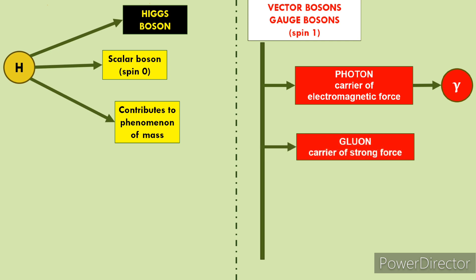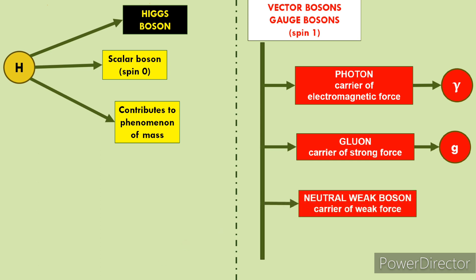Jo second type of boson hai gauge boson mein, wo gluon kehlata hai. Aur jaise ki iske naam se pata chalta hai, yeh strong force ko carry karne wala maana jaata hai — strong force, jo nuclear force rehta hai. Third type hai neutral weak boson. Yeh naam se pata chal raha hai, weak force ka carrier particle hai.